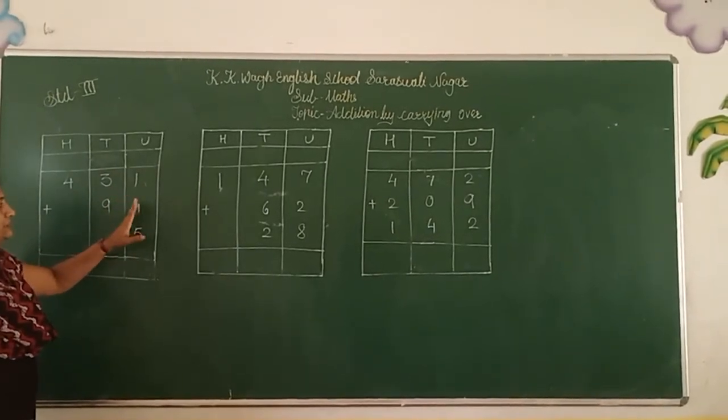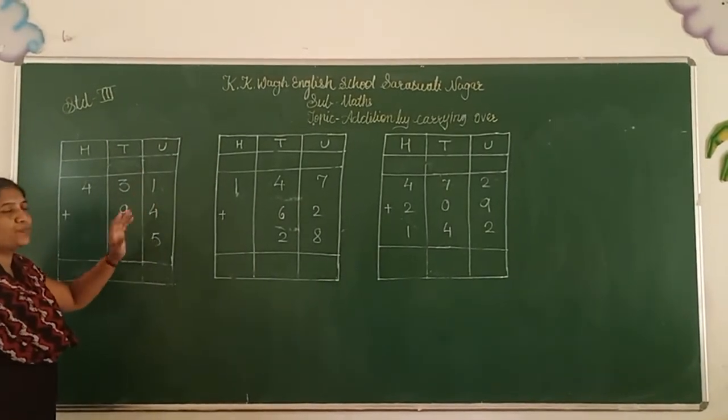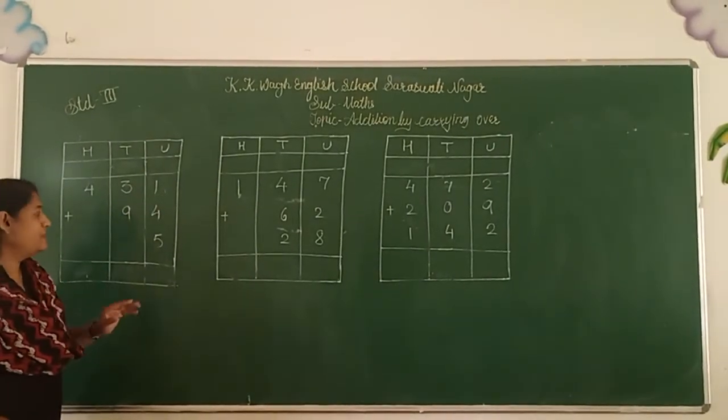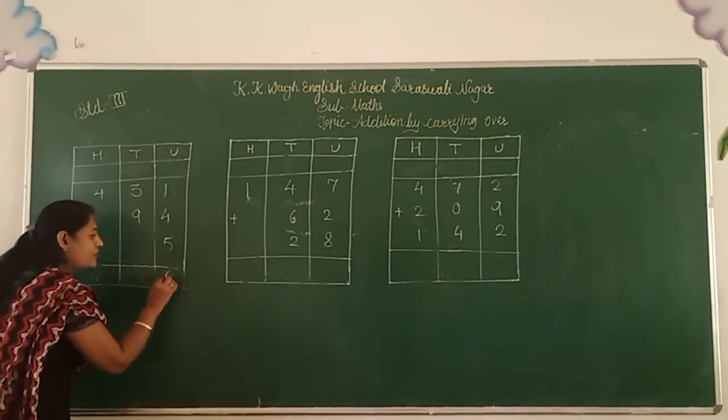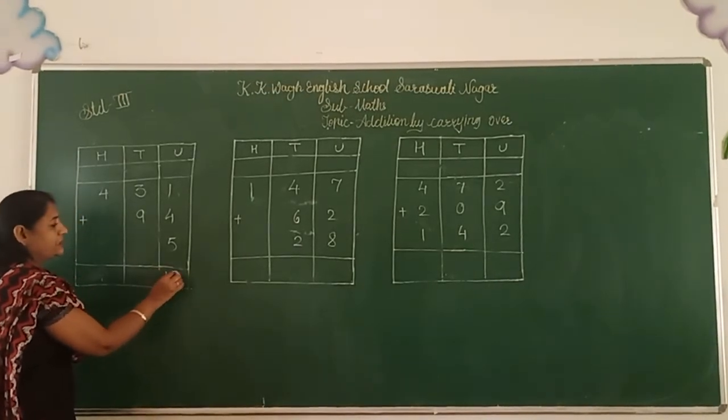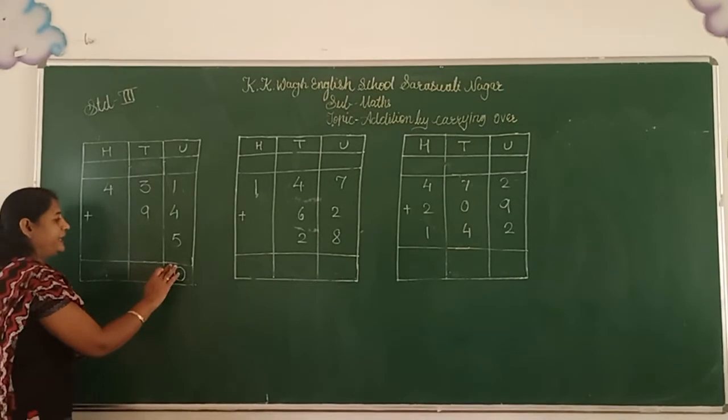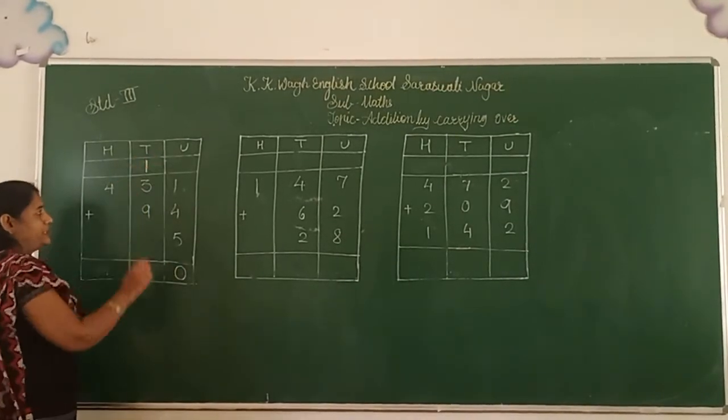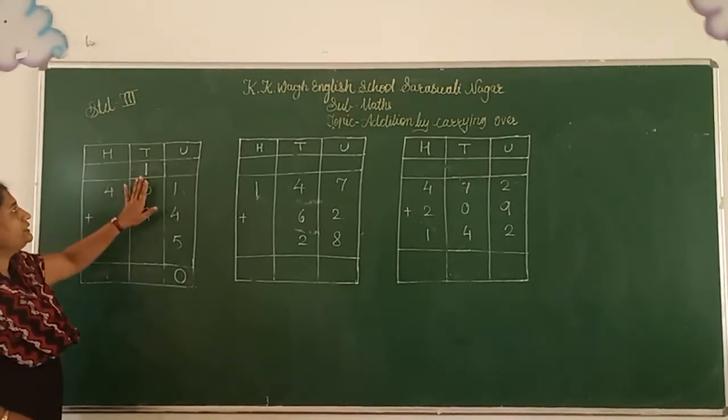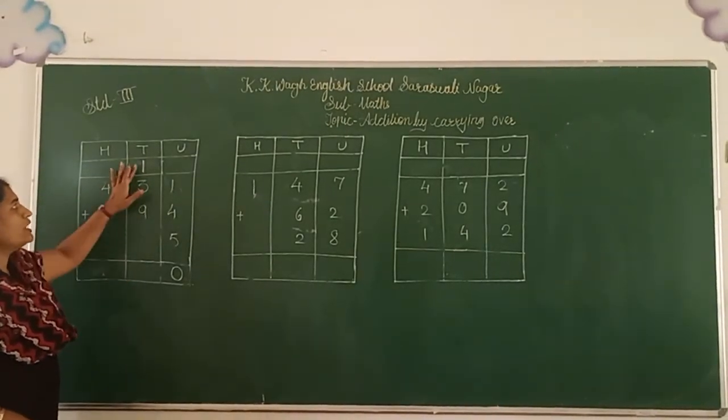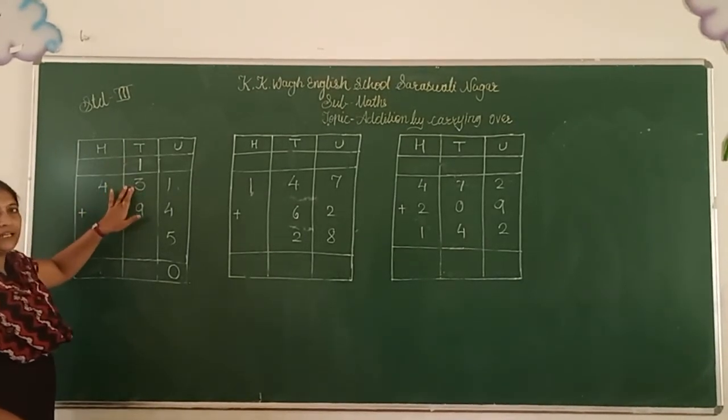There is 1 plus 3 and 1 plus 4 plus 5. Now 1 plus 4 means 5. 5 plus 5 means 10. We write here unit place, that is the unit place number is 0. And 10s we carry in 10 space. Afterwards we count the 10 side. 1 plus 3 plus 9. 1 plus 3 is 4.